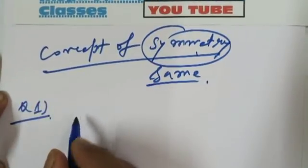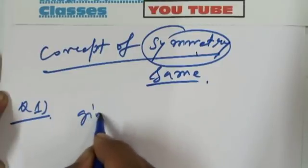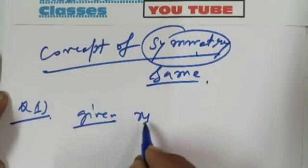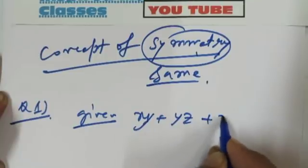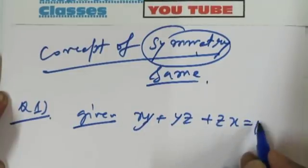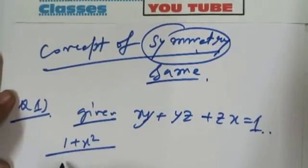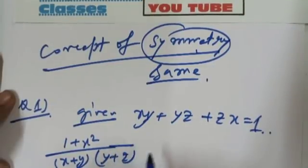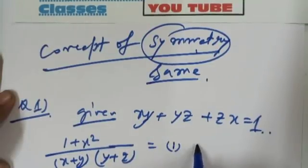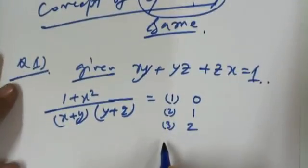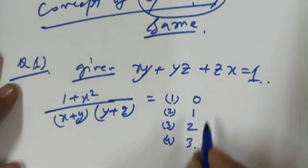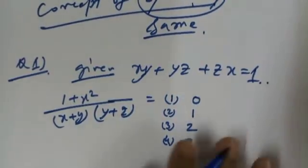Question number 1: the given value is xy + yz + zx = 1. What will be the value of (1 + x²) / (x + y) × (y + z)? Option 1 is 0, option 2 is 1, option 3 is 2, and option 4 is 3. Which is the correct option?